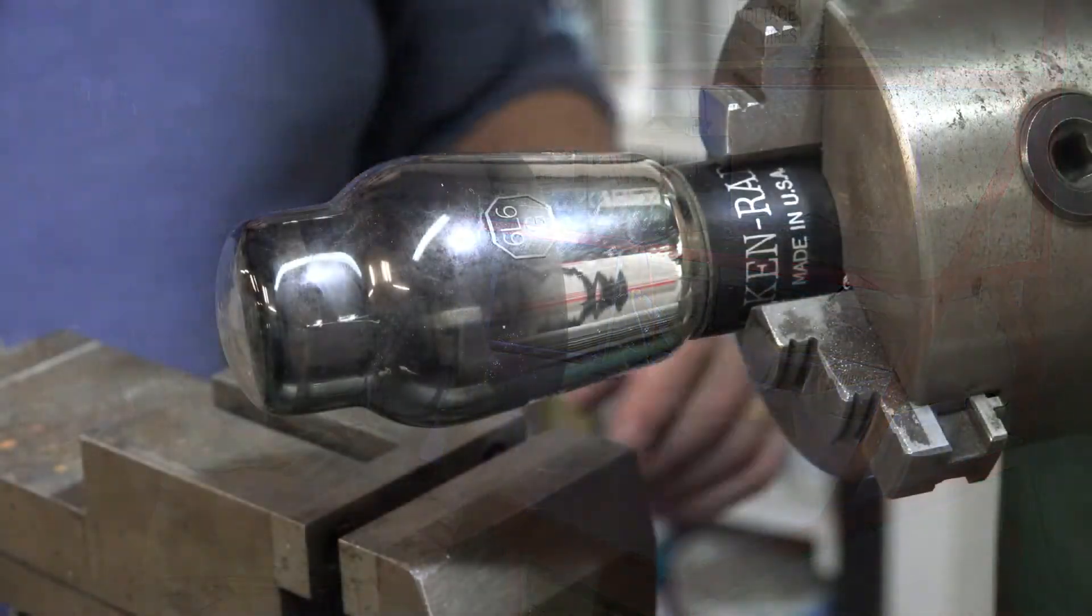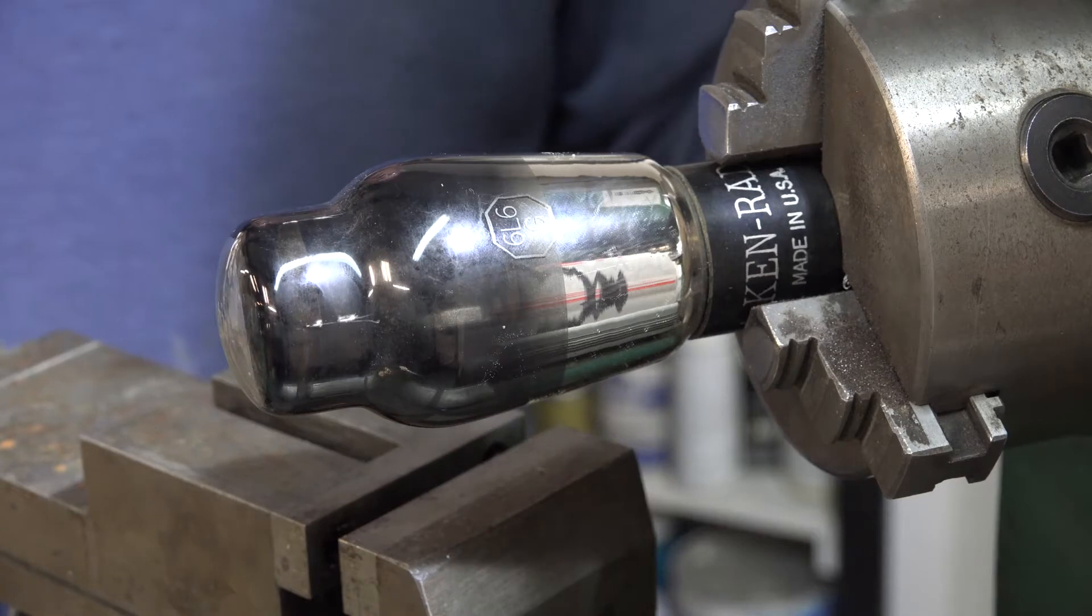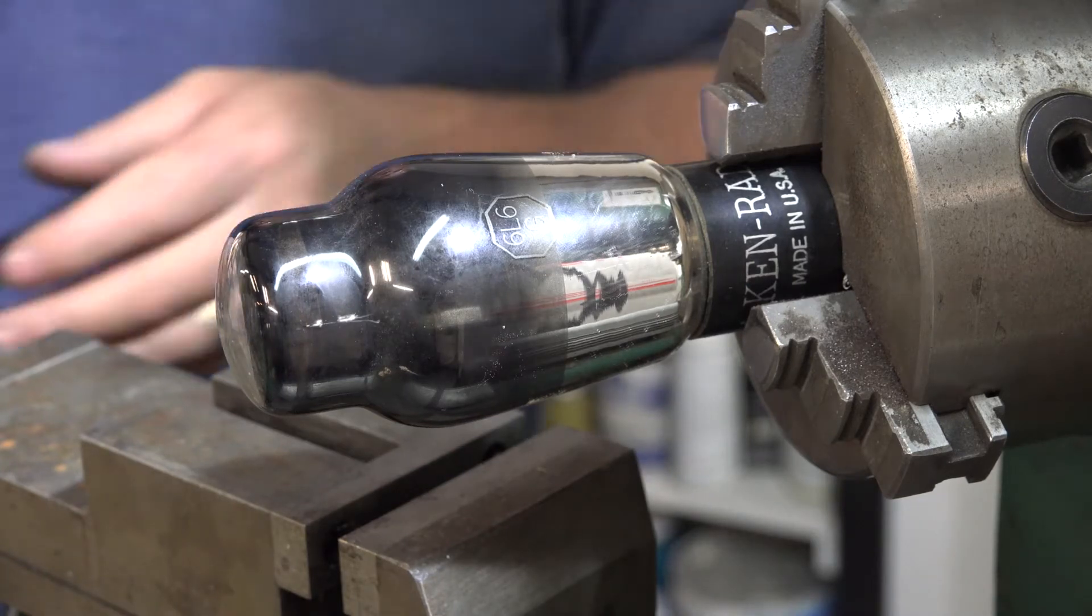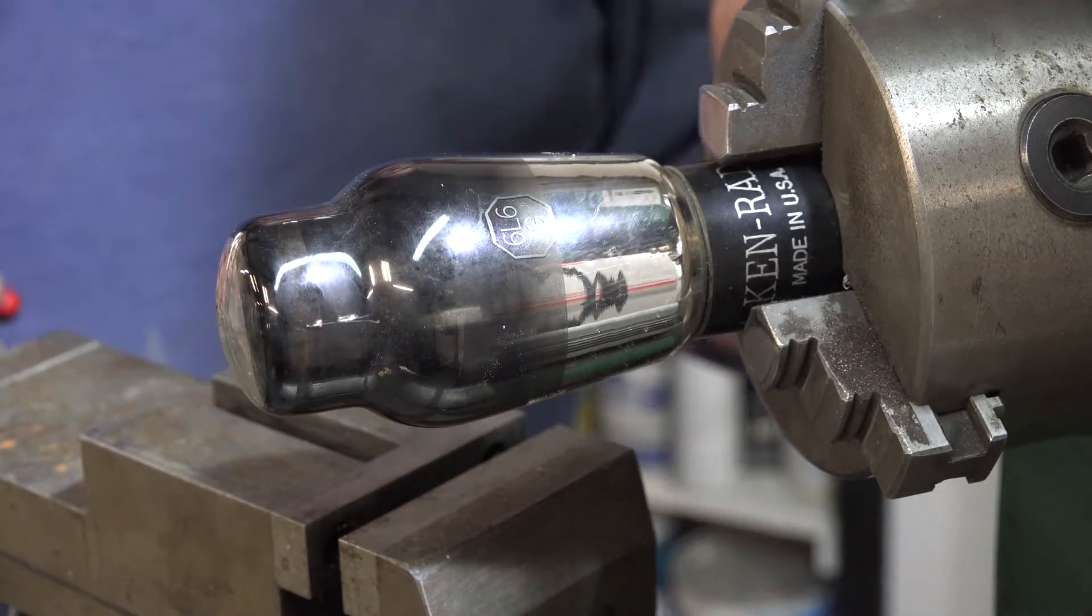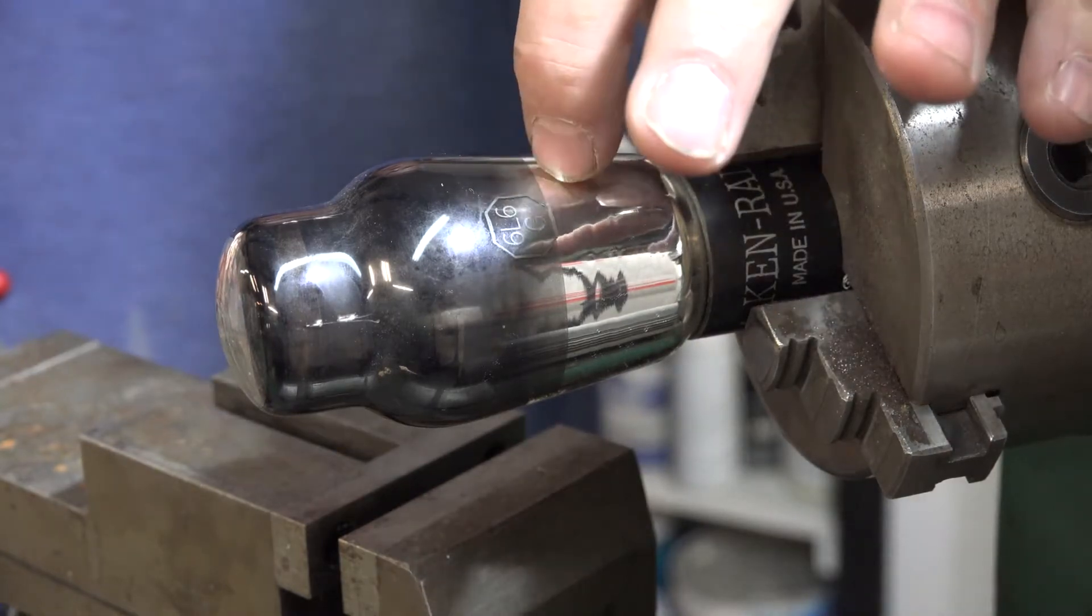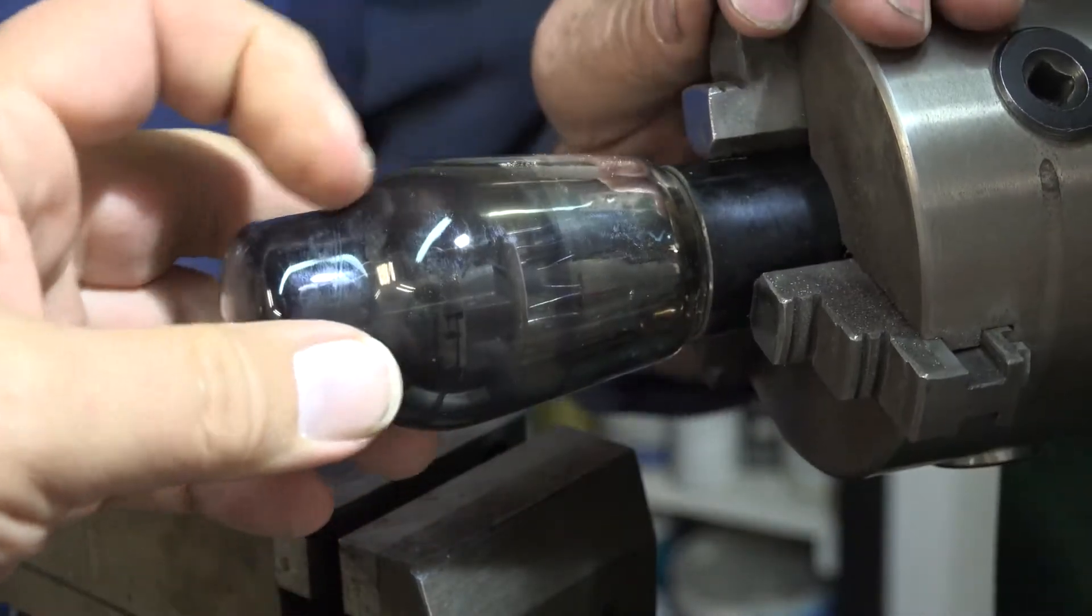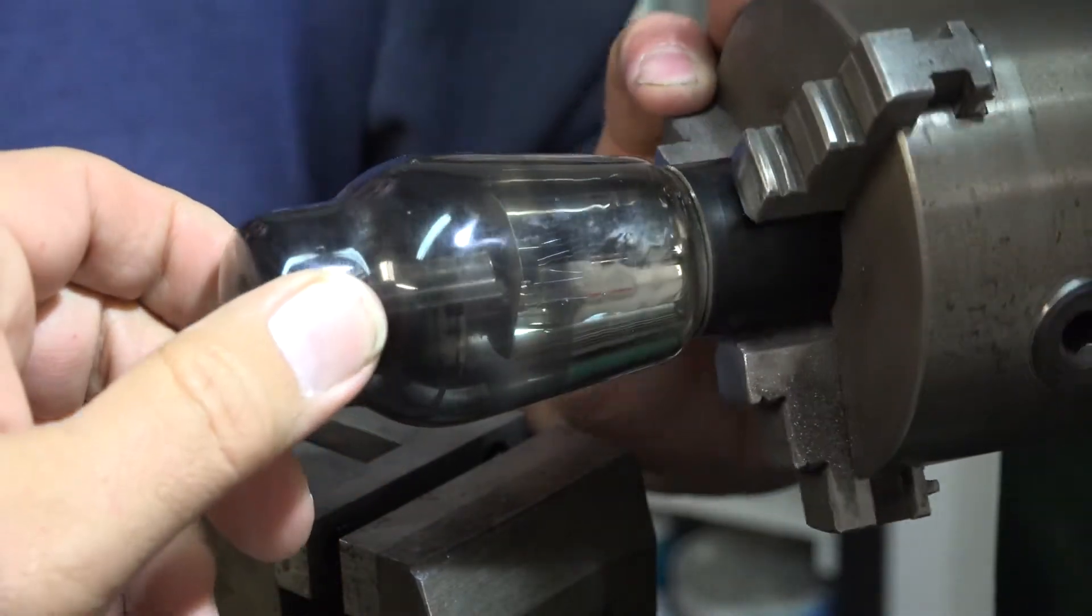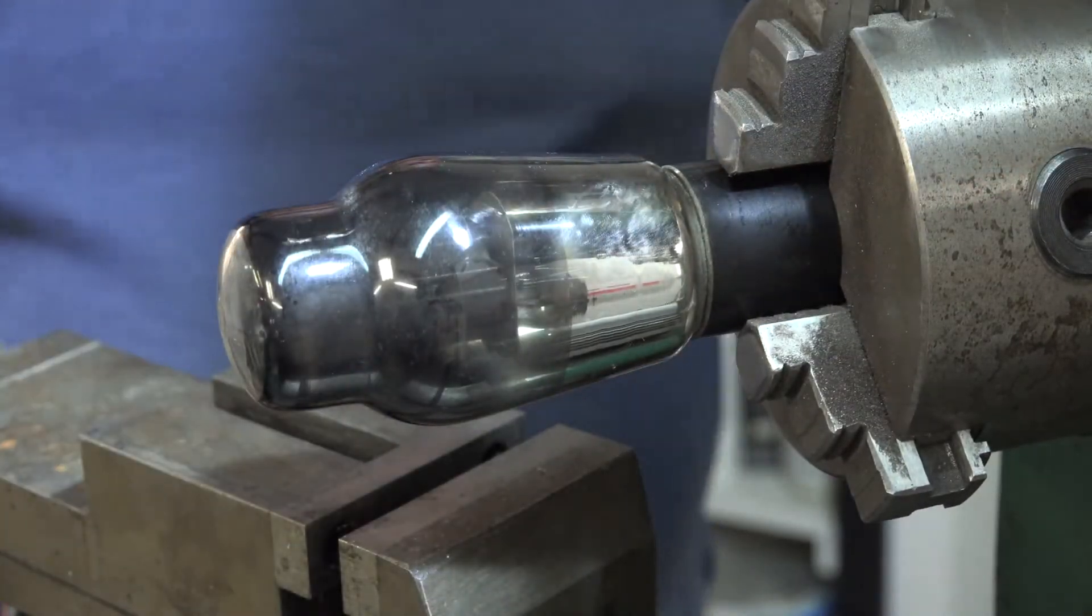Let's go ahead and get started on taking this one apart. This is a 6L6. It's probably got the same thickness of glass as the first one. I could push pretty hard on that one, probably this one as well. If you look in there, you can kind of see the structure under the smoke, right in here, just about the real line.